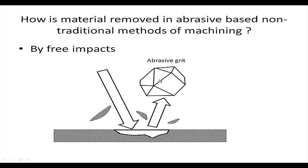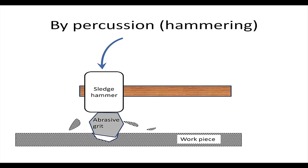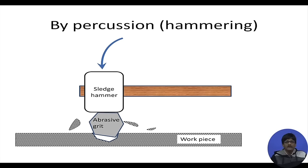Another way abrasive particles can be used to remove material is by percussion — essentially by hammering. A sledge hammer with a steel hammer head does not impact the work piece directly; a very hard abrasive grit is placed in between, so the hammer impacts the abrasive, and the abrasive in turn impacts the work piece, removing material.